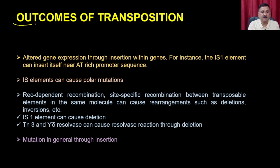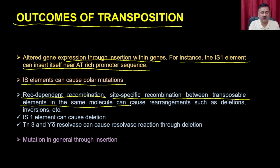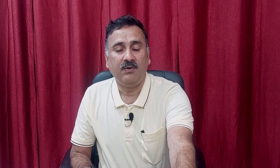The outcomes of transposons include: altered gene expression through insertion within a gene — for example, the IS1 element can insert itself near promoter sequences; IS elements can cause polar mutations and rec-dependent recombinations; site-specific recombination between transposable elements in the same molecule can cause rearrangements such as deletions and inversions; and mutations in general through insertions.